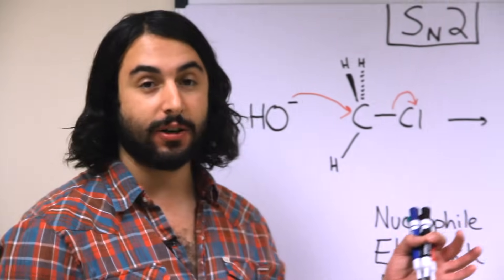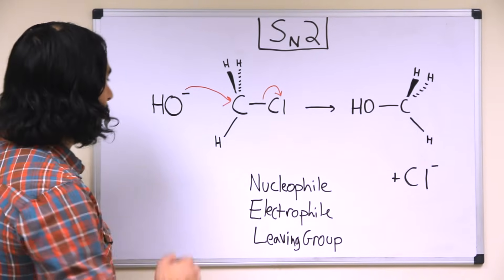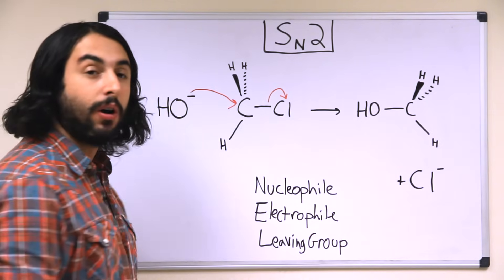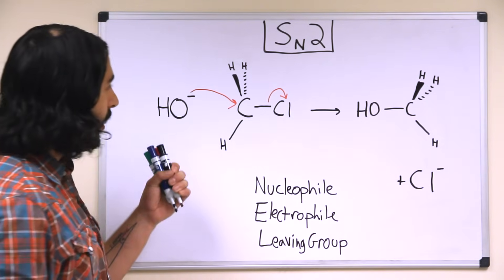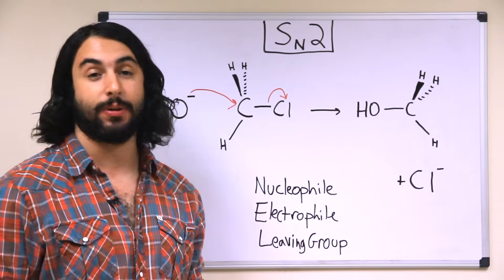So for any substitution reaction, one atom or group is being replaced by another atom or group. Let's take a look at this generalized SN2 here. We've got a hydroxide ion replacing a chloro group on this molecule. So for any SN2 reaction, we want to identify three key players.